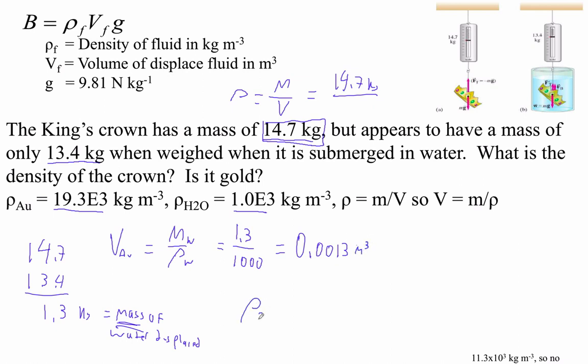The density of the crown is equal to 14.7 kilograms divided by 1.3 liters. Okay, so 14.7 divided is 11,307 kilograms per cubic meter.